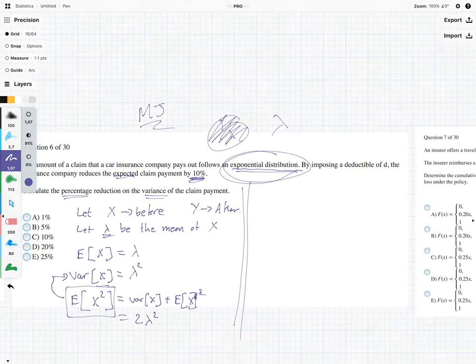Because what we see is the expected value of Y, which is the claims after the deductible, is being reduced by 10%. So it's 0.9 Lambda.